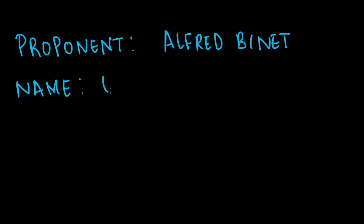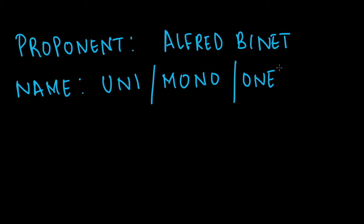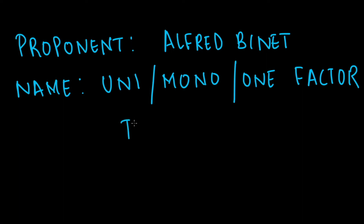The name of the theory can be called the uni-factor, mono-factor, or one-factor theory of intelligence. Once we discuss what the theory talks about, we will be able to reason out why it is actually called the one-factor or mono-factor theory of intelligence.